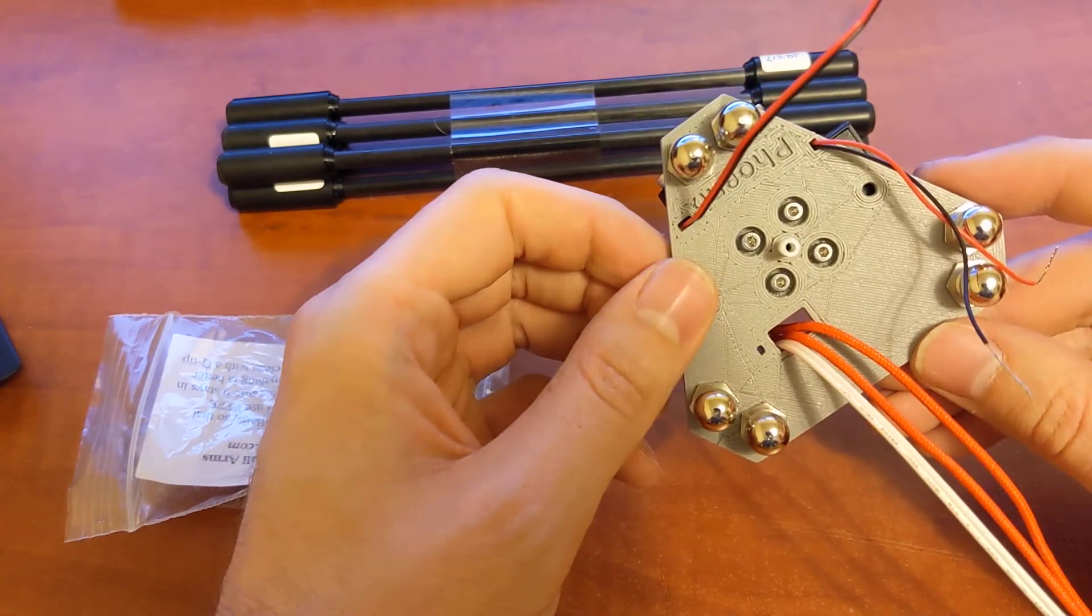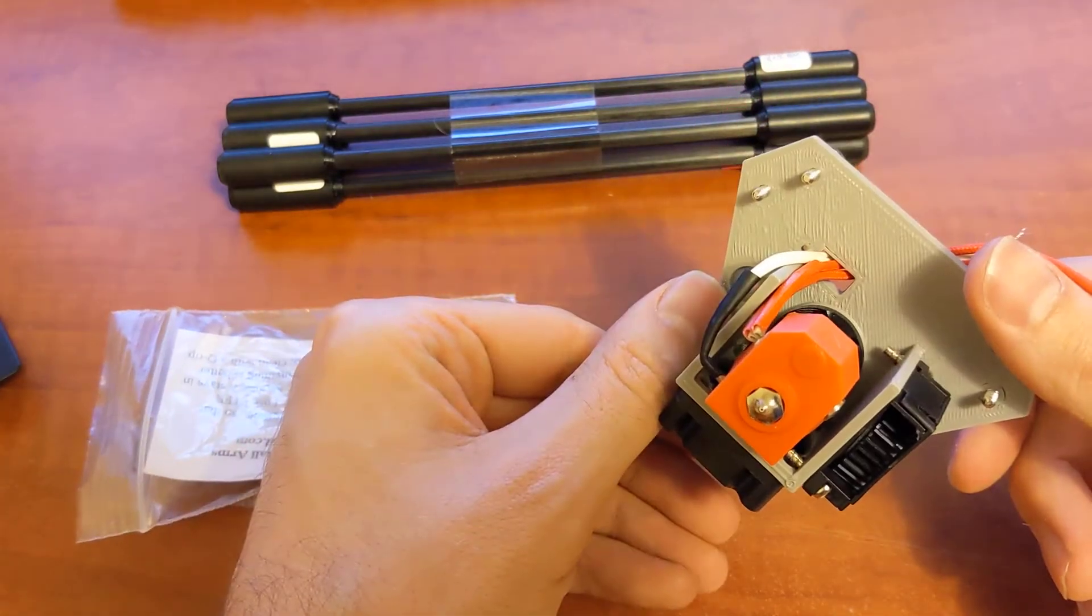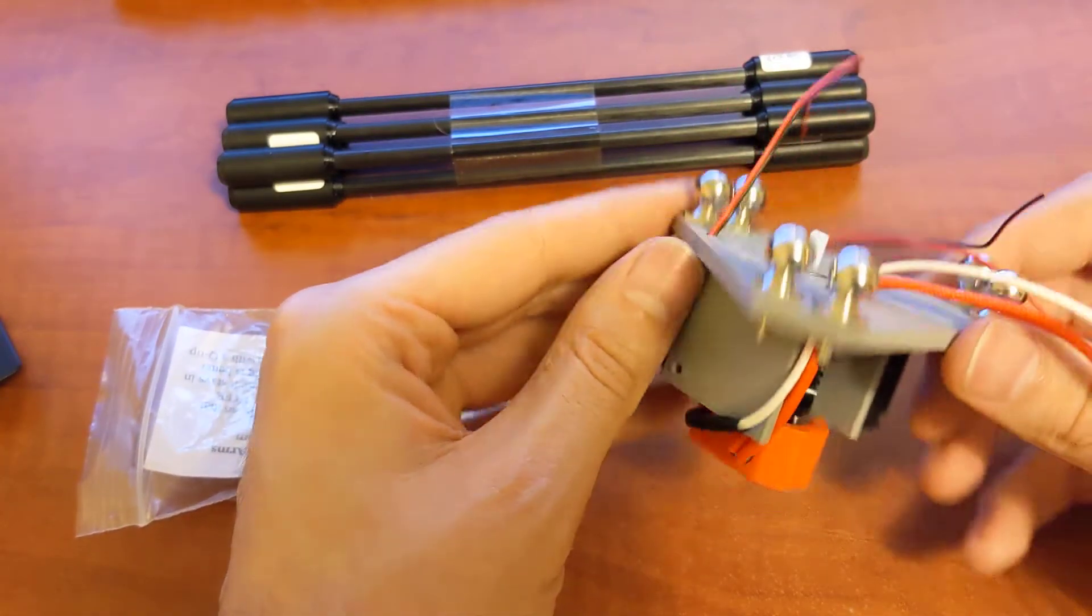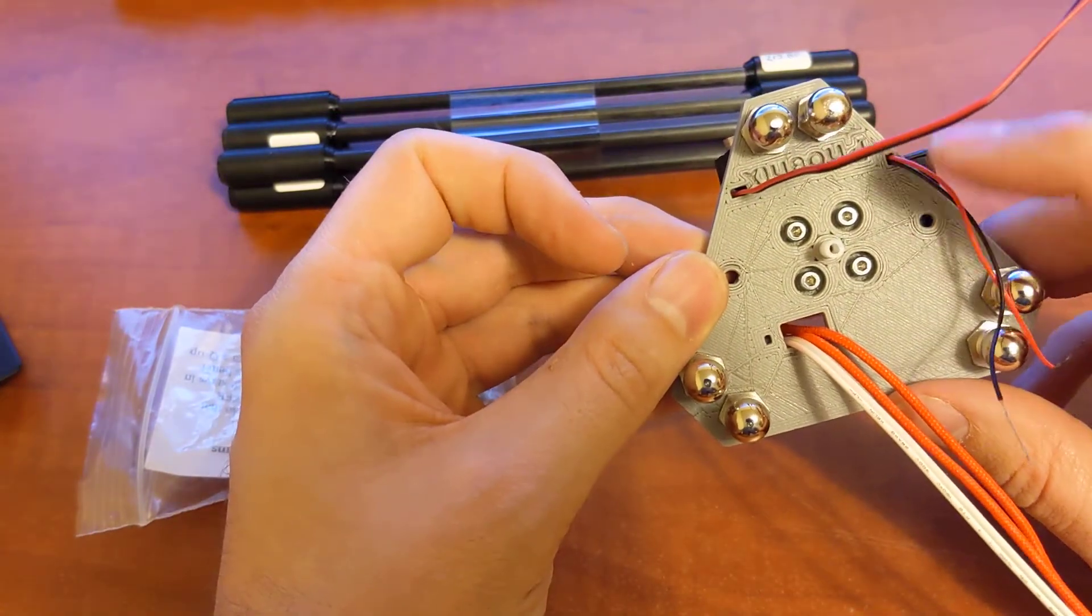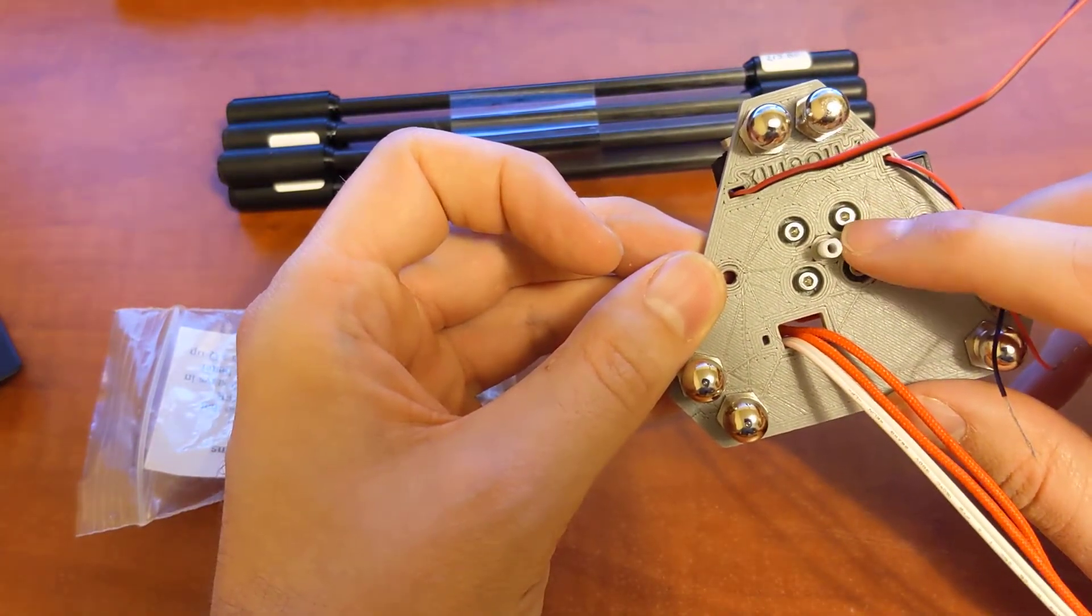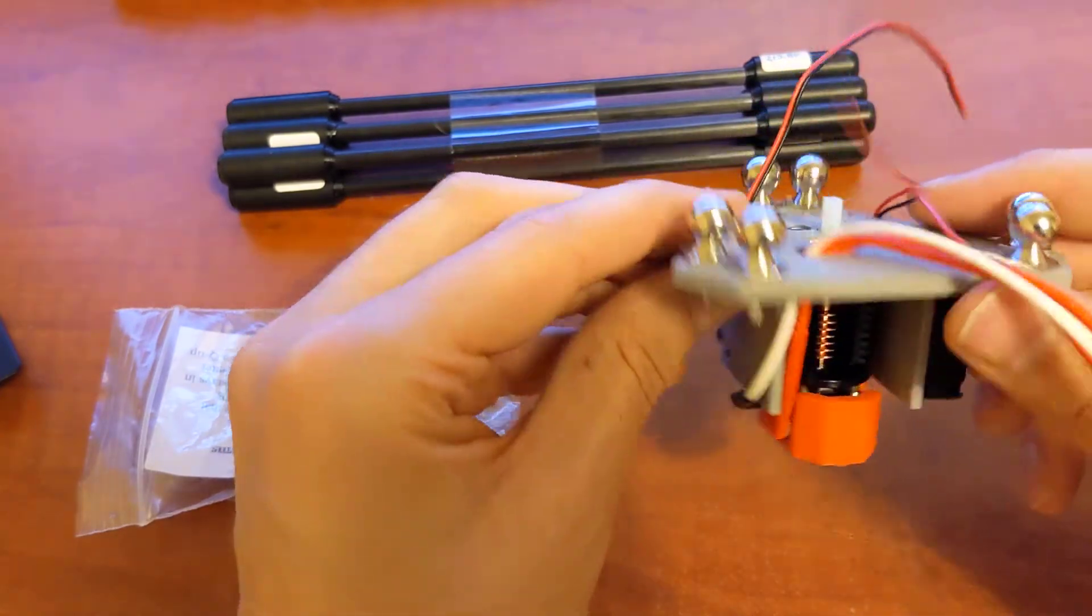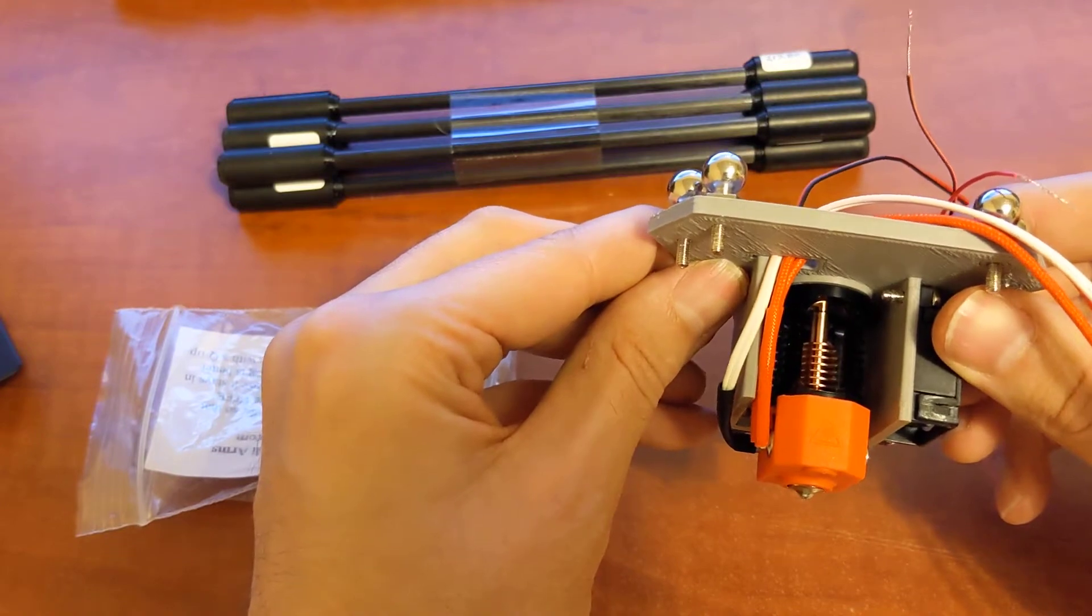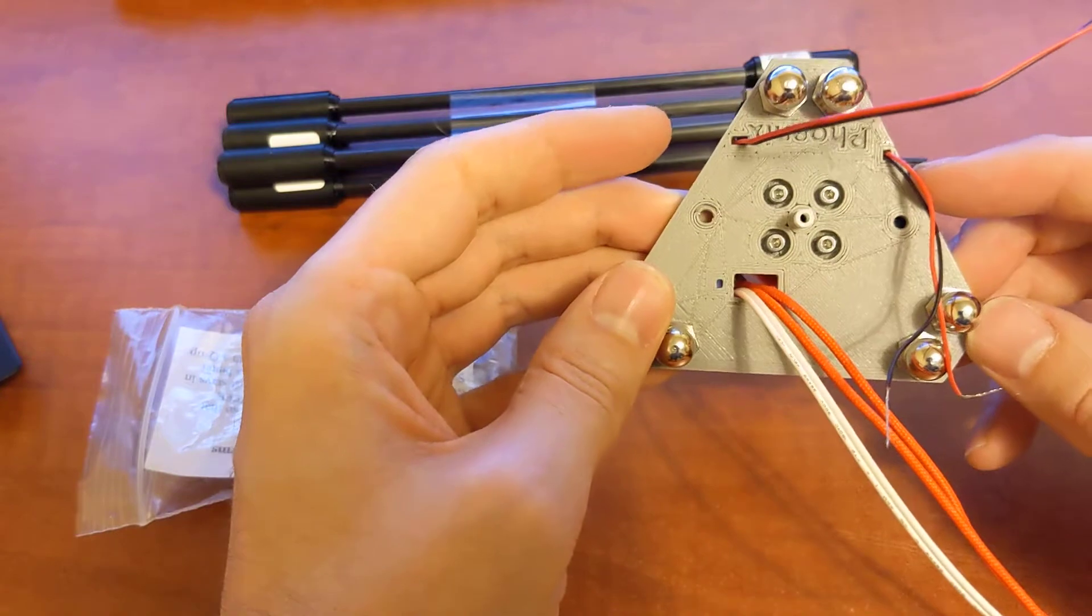I am using a Fetus Dragon hot end. The reason why I use these is because of the rigid mount. I don't really like the E3D groove mount, so I made this effector for Fetus Dragon hot ends.